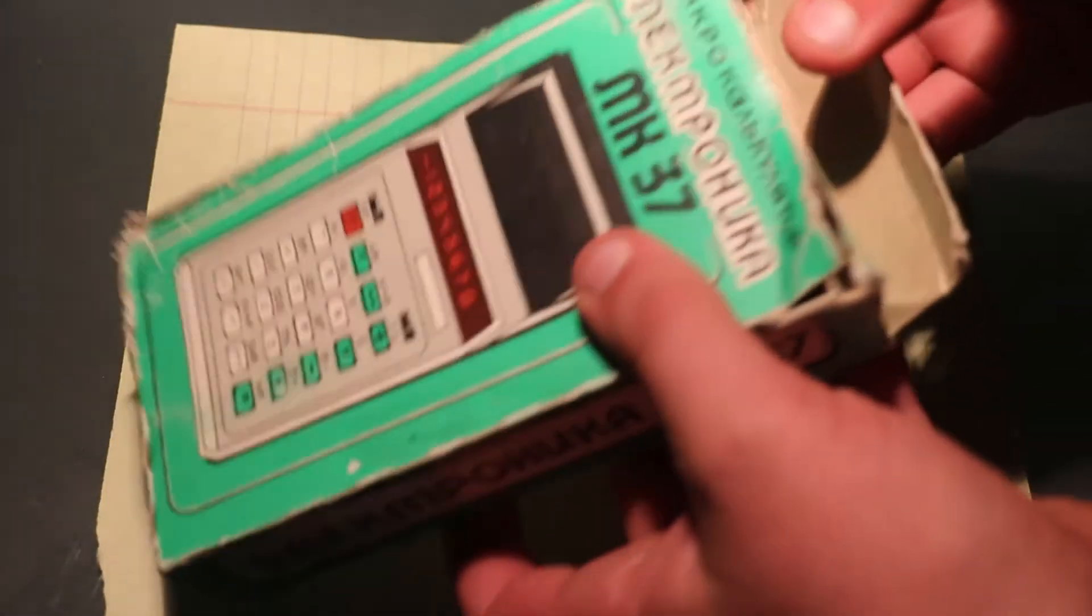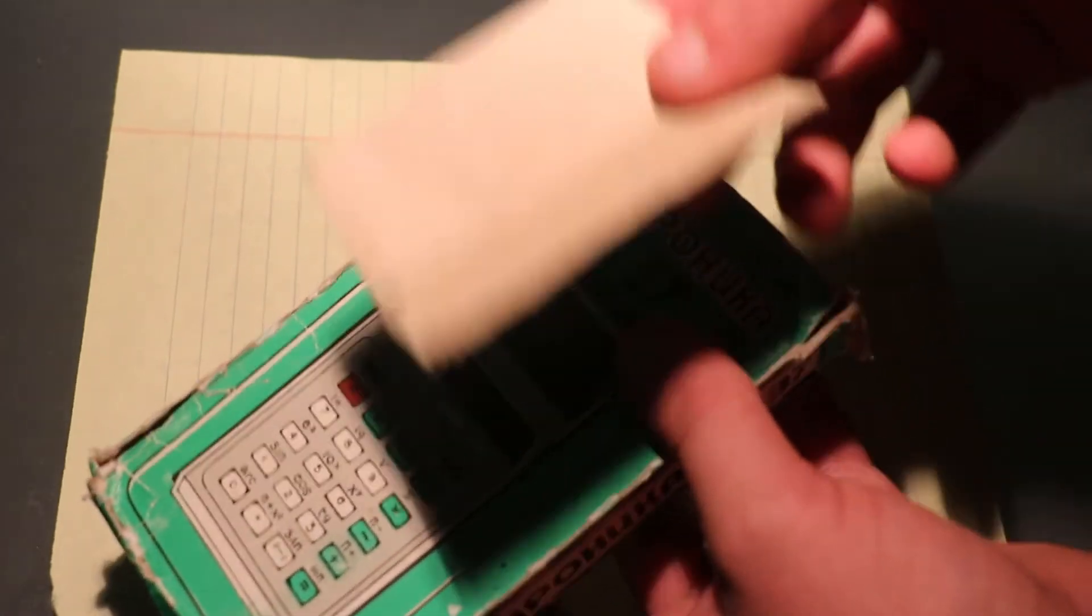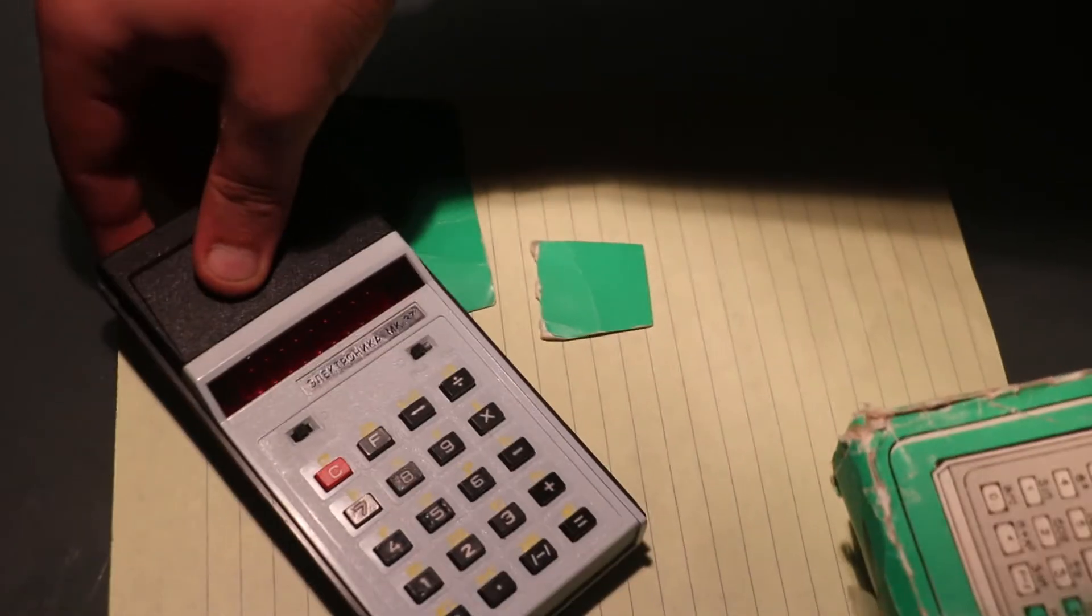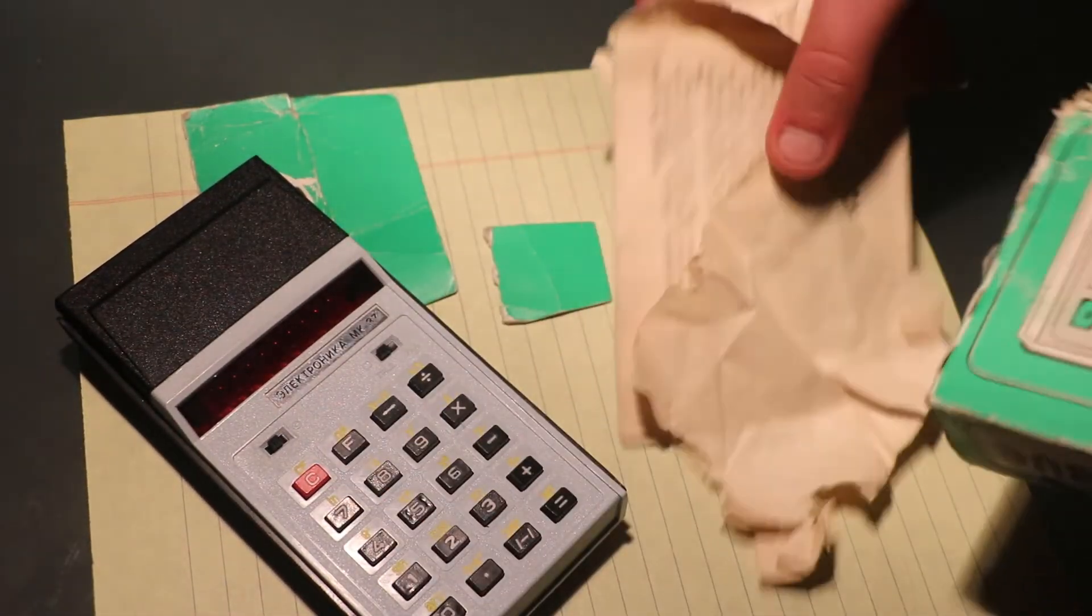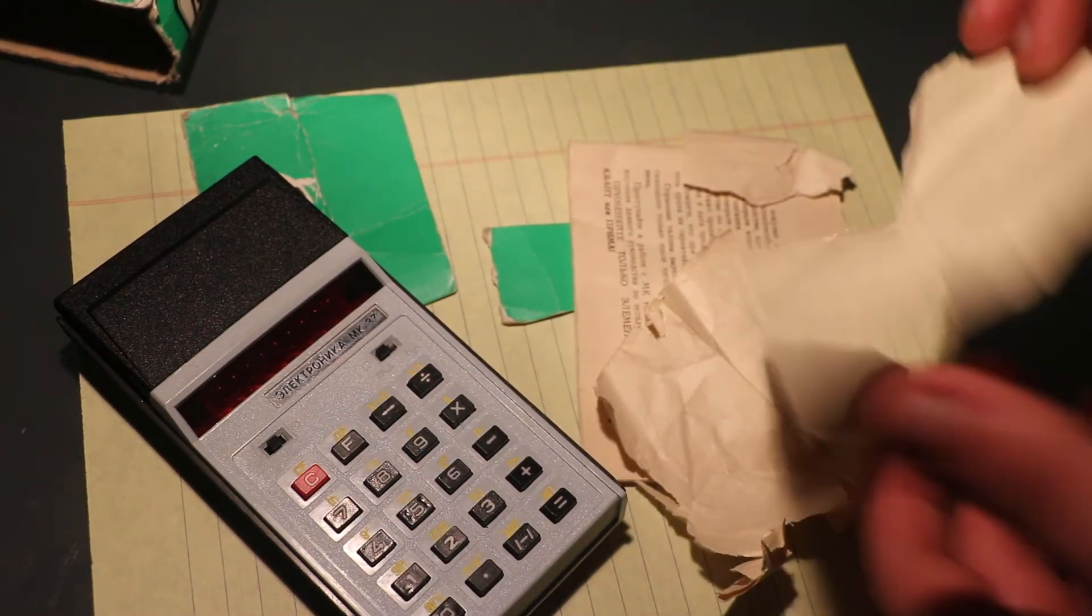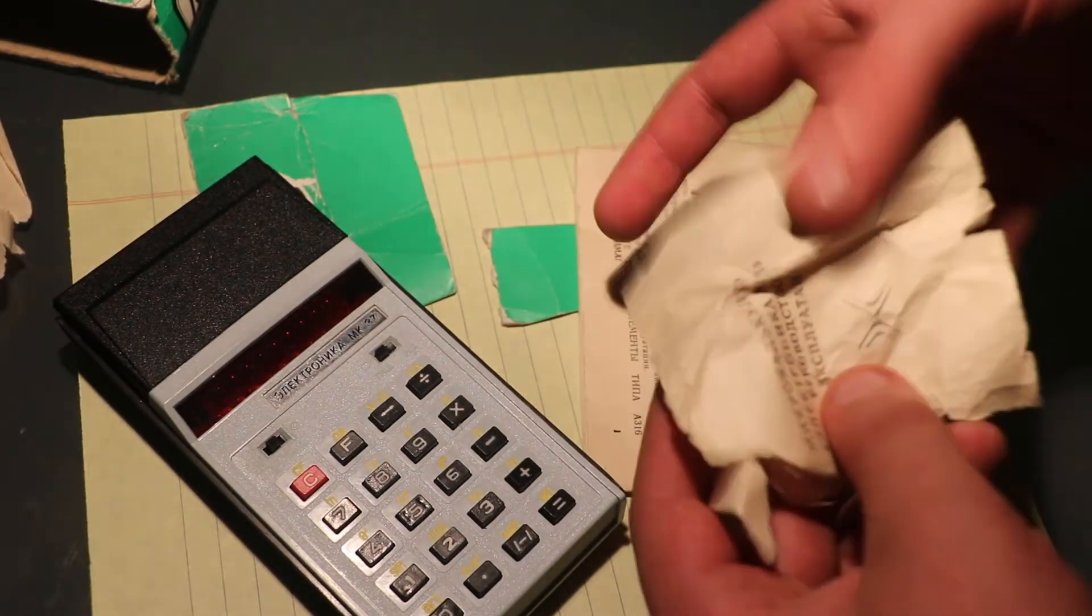The box itself is in pretty good quality, besides the fact that the top literally comes off. Taking the calculator out, I will put it here so you can look at that. This also comes with all the original manuals and papers.